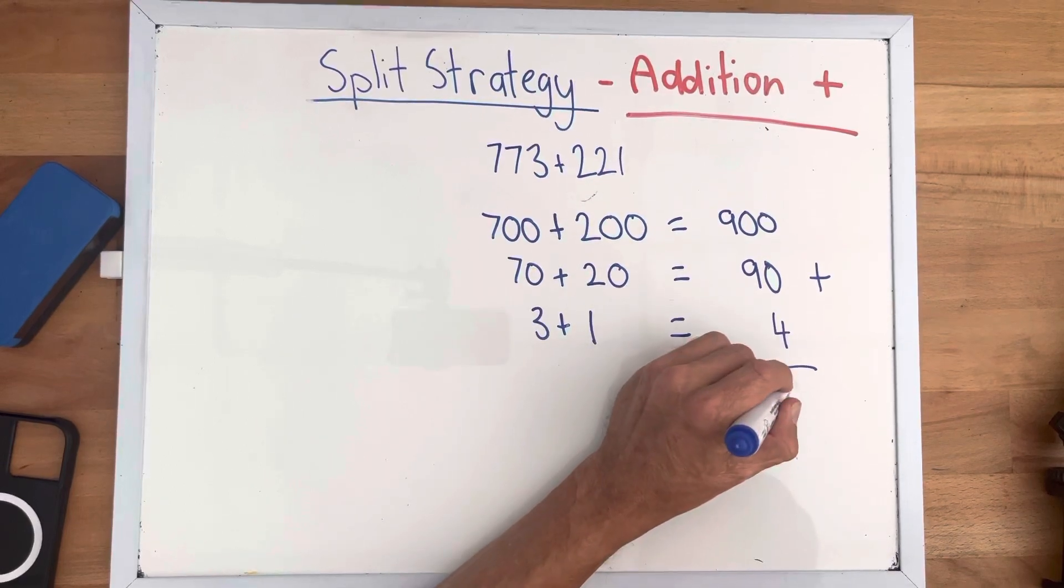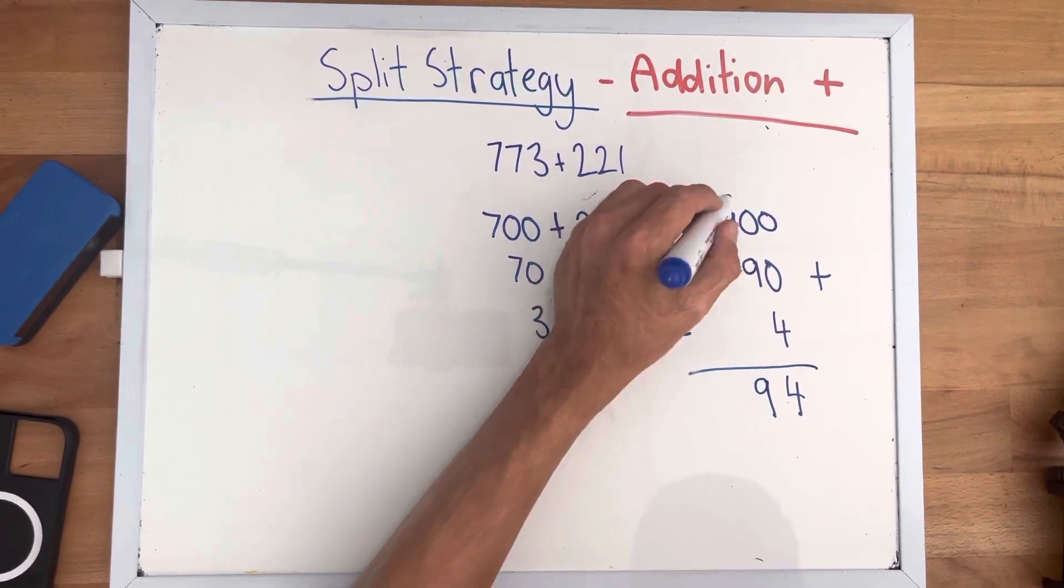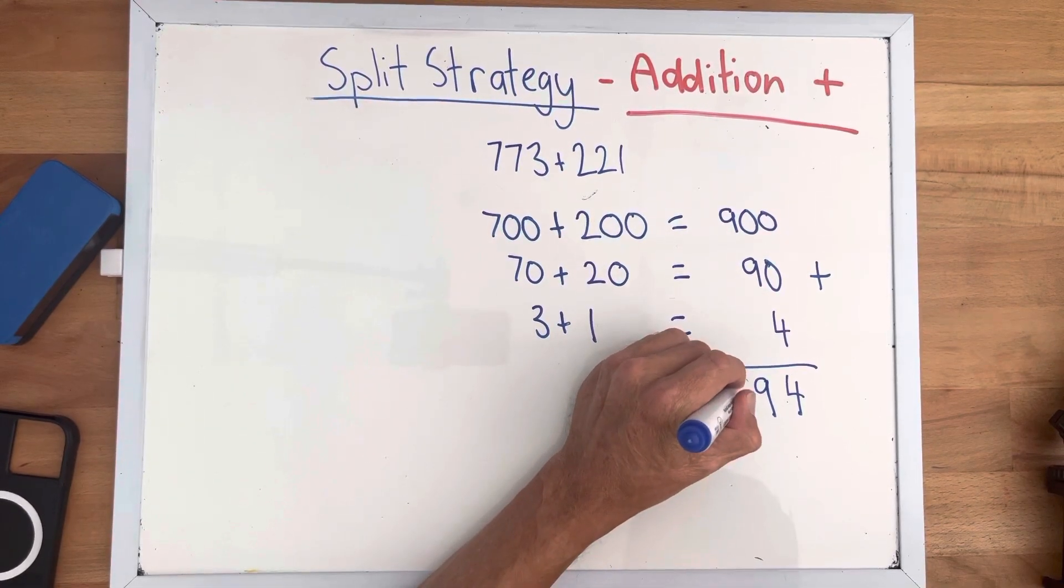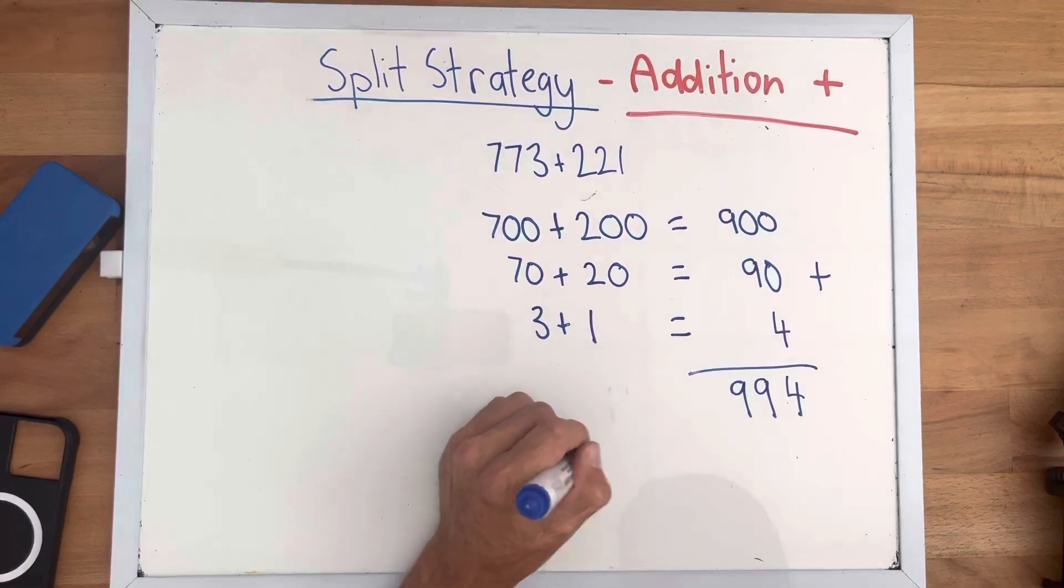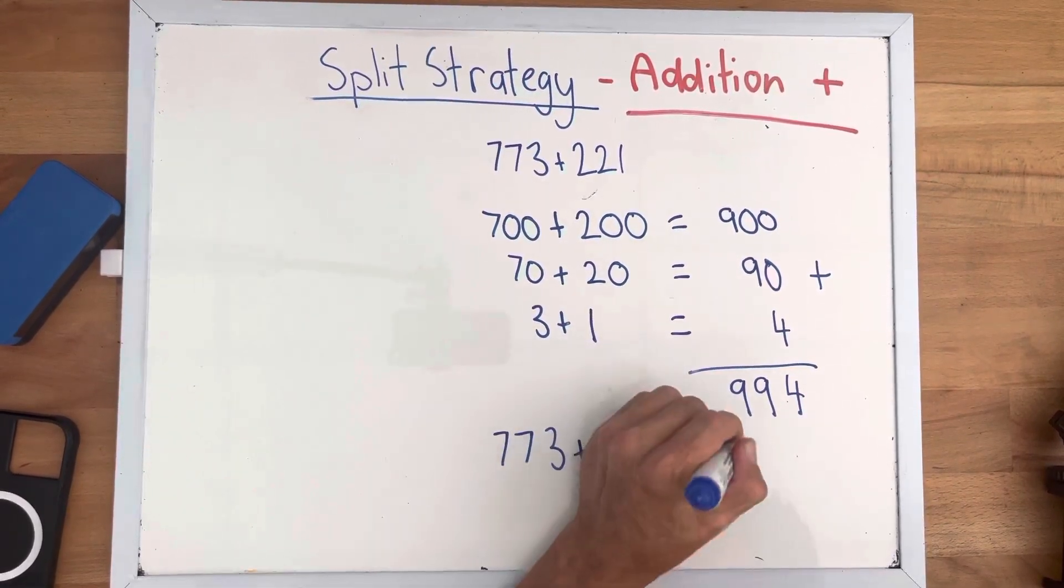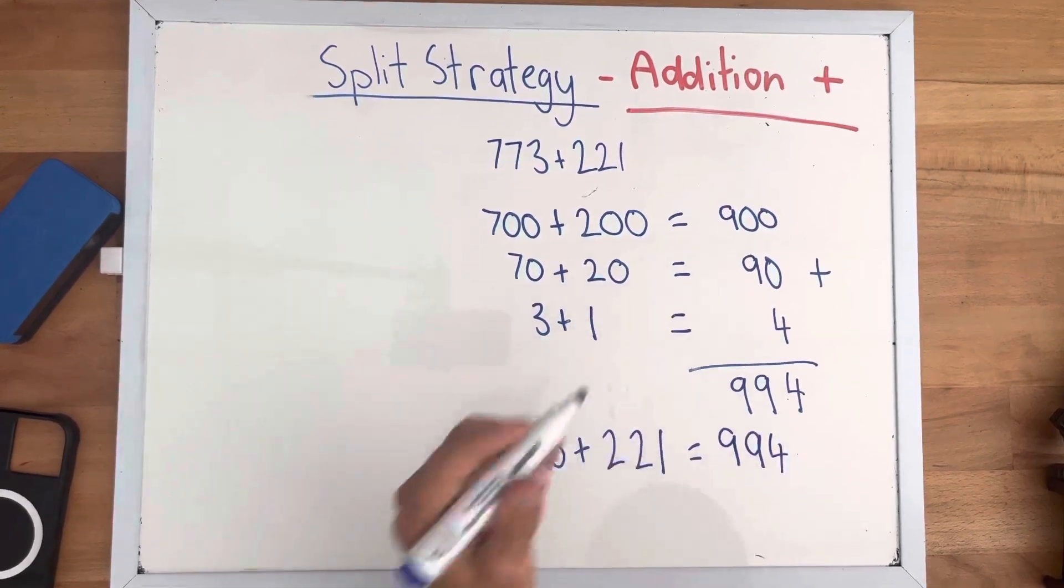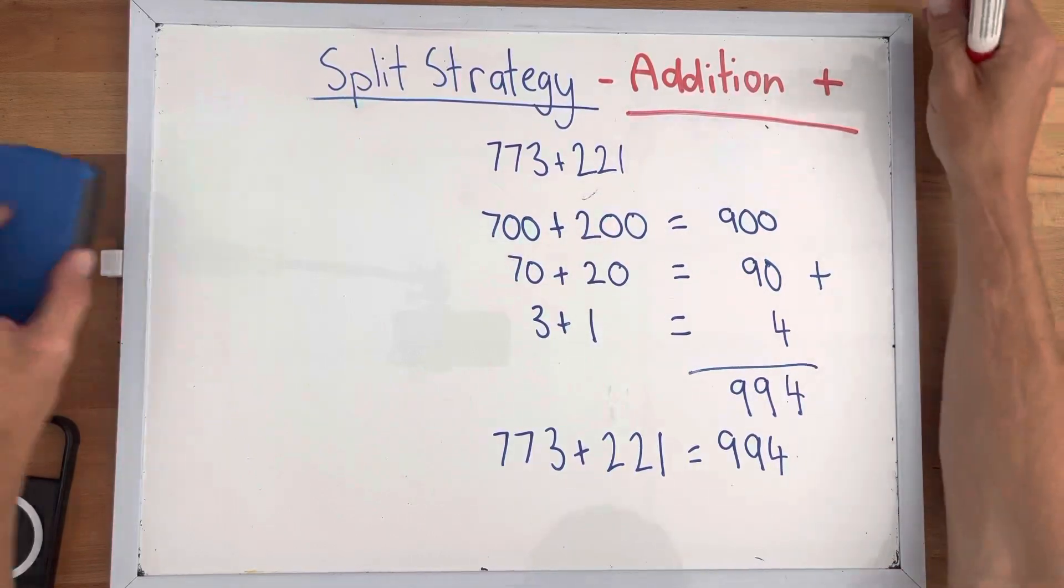We add our ones, which equal 4. We add our tens, which equal 9. We add our hundreds, which also equal 9. So 773 plus 221 equals 994. So that is our three digit split strategy without trading.